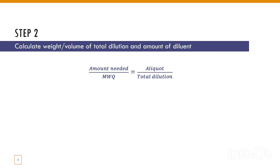The next step is the calculation of the total dilution and the amount of diluent required to make that dilution. The formula is: the amount of the drug that we need to weigh, divided by the minimum weighable quantity calculated in the previous step, equals the aliquot divided by the total dilution. By rearranging the whole equation, we can calculate the total dilution.